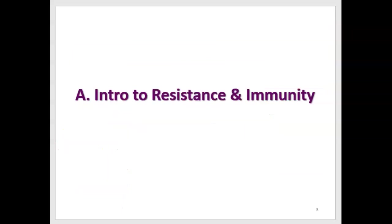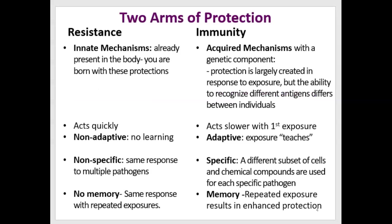Let's start by comparing resistance and immunity. We have two arms of protection. The first we're born with, so we call them innate mechanisms. Resistance mechanisms are innate — you're born with these protections. They act quickly and they're not adaptive in any way. There's no learning that takes place; they just exist the way they are and they don't change.